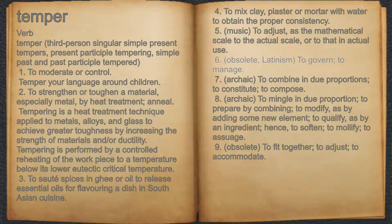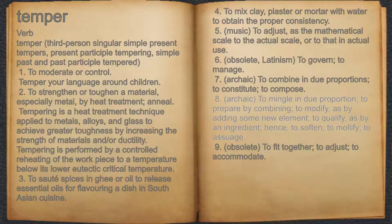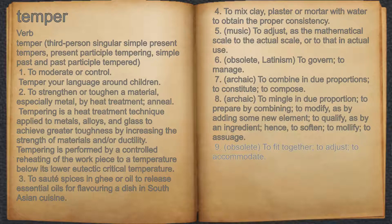16. Obsolete, Latinism: to govern, to manage. 17. Archaic: to combine in due proportions, to constitute, to compose. 18. Archaic: to mingle in due proportion, to prepare by combining, to modify as by adding some new element, to qualify as by an ingredient; hence, to soften, to mollify, to assuage. 19. Obsolete: to fit together, to adjust, to accommodate.